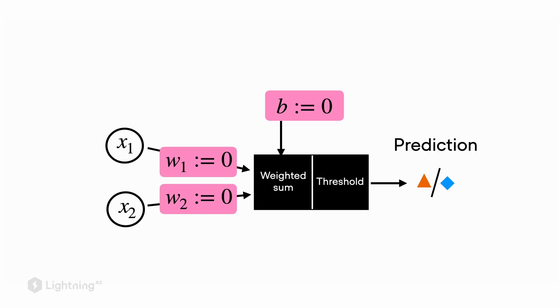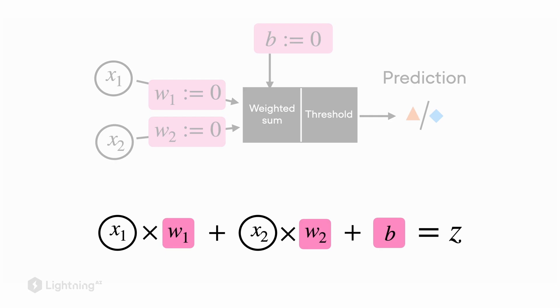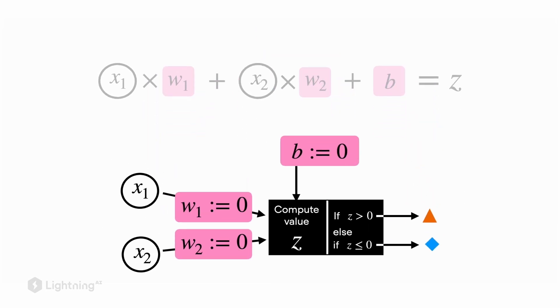We will start with making a prediction. Consider our initialized perceptron model. As you might recall from the earlier videos, we compute z, the weighted sum, which is essentially a multiplication between the inputs and the weights plus the bias unit. Once we computed the weighted sum z, we can then apply the threshold: if z is greater than zero, we output the orange triangle, class label zero; otherwise we output the blue diamond, which is class label one.